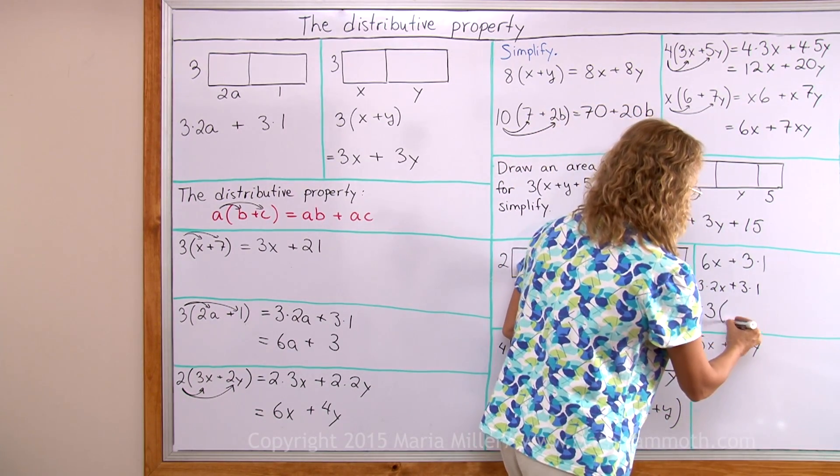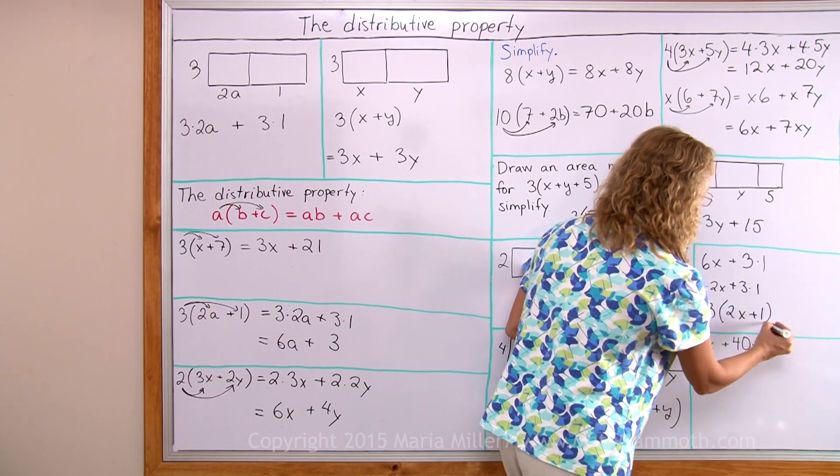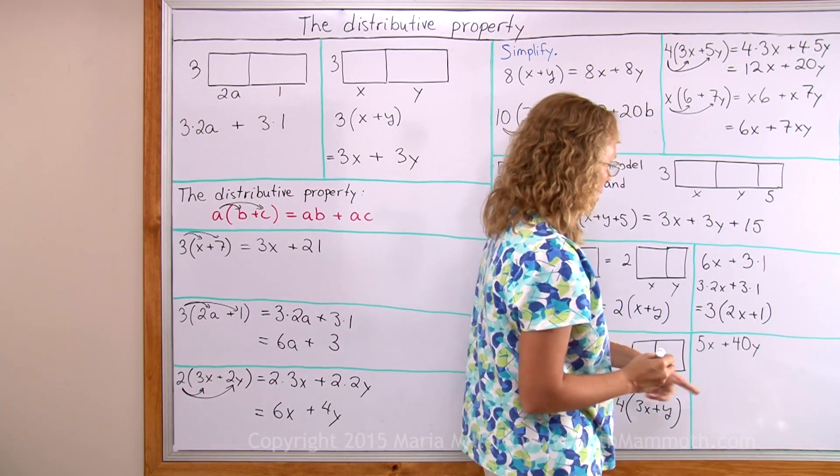And now I can use distributive property backwards and write the area of my combined rectangle. 3 is the one side, and the other side has the length 2x plus 1.